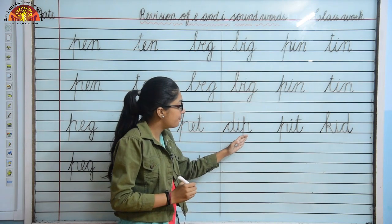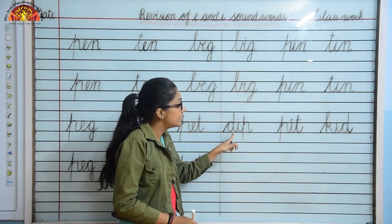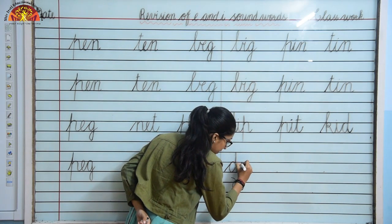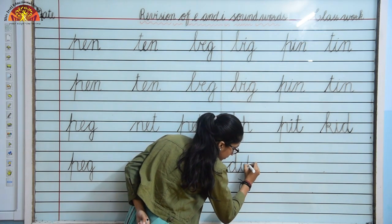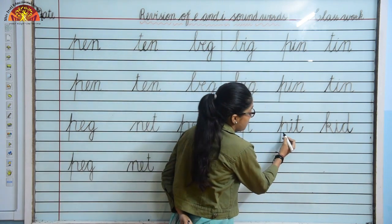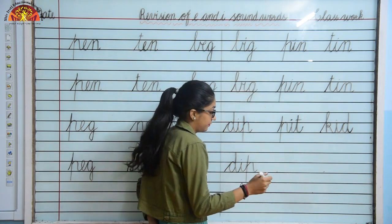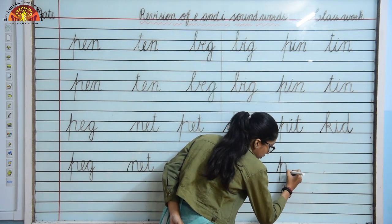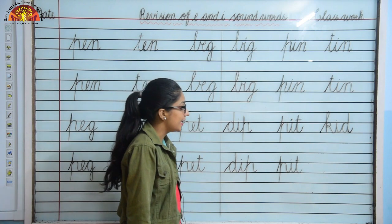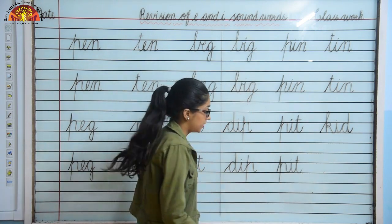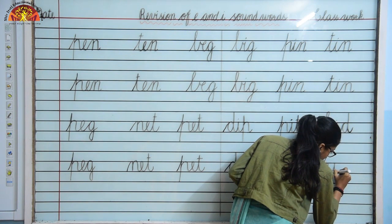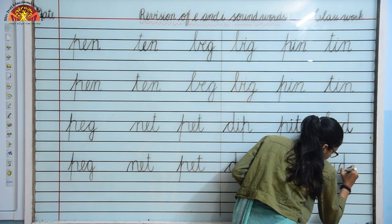Come to next line. D, I, P — Dip. So let's write here D, I, P. Touch the lines and write. Speak and write kids properly. Now P, I, T — Pit. Next is K, I, D — Kid. So write here K, I, D — Kid.